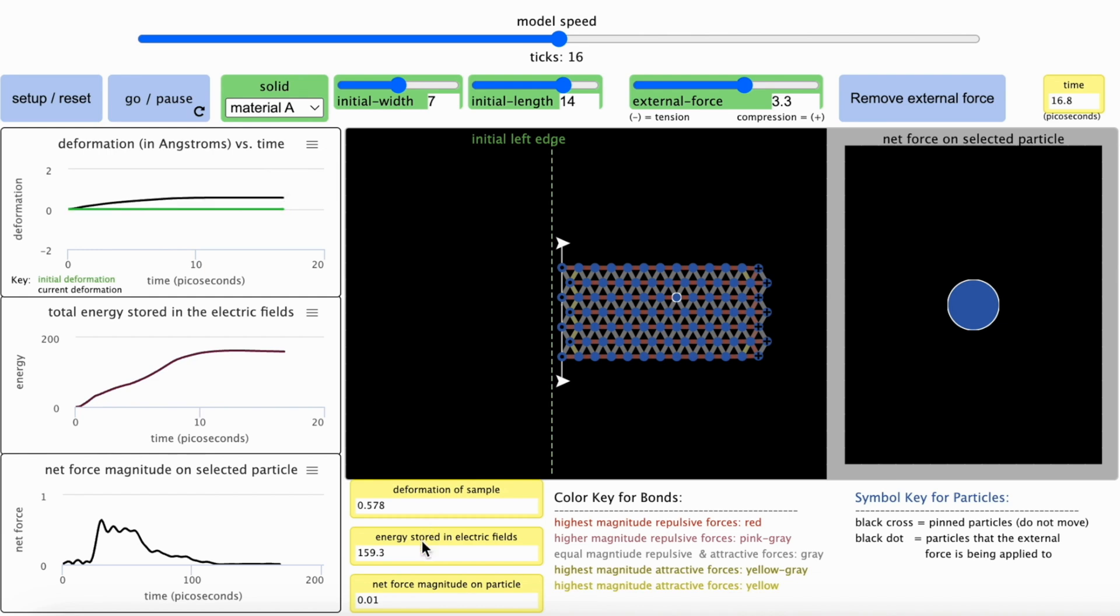This monitor indicates the total energy stored in the electric fields between the particles at this point in time. This graph shows how that has changed over time. You can use your cursor to hover over any spot in the graph to get a measure of the coordinate values at that point on the graph.